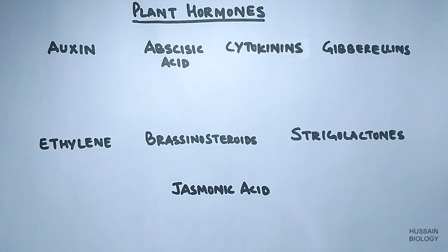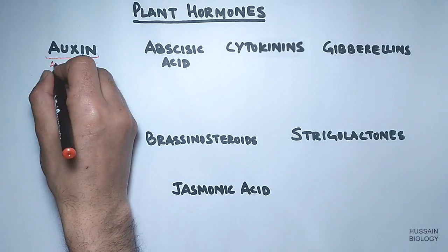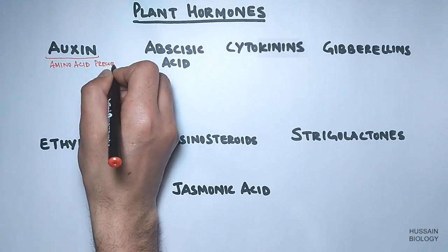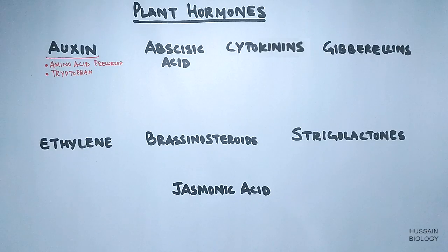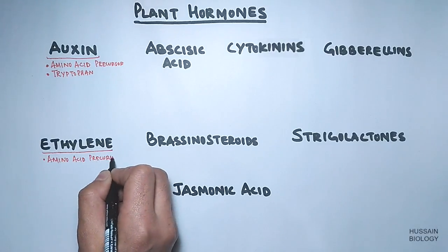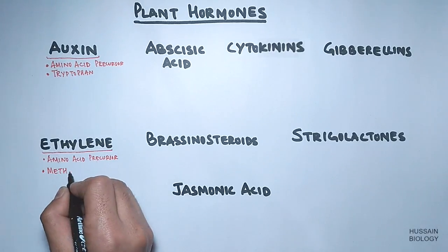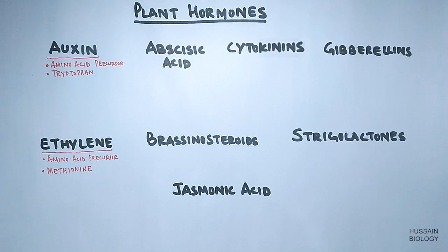First of all let's see the precursors of these hormones. Auxin has an amino acid precursor — that's tryptophan. When we study the biosynthesis of auxin we will see how tryptophan gives us the auxin. Ethylene is also derived from an amino acid, methionine. These two have amino acid precursors.